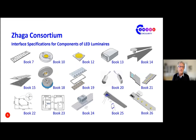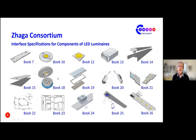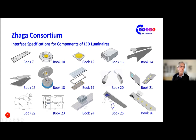The results of this work are interface specifications for components of LED luminaires. These standards are also called books at Saga, and you can see a selection of visuals of these books here. Examples are Book 18, which describes the interface between an outdoor luminaire and a communication or sensor module, or Book 23, which describes the well-known analog LED set interface between LED modules and control gear. Book 26 for replaceable linear LED modules is currently in progress.